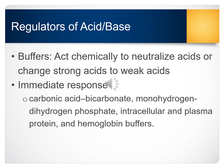The buffer is the fastest acting system and the primary regulator of acid-base balance. Buffers act chemically to change strong acids to weak acids or to neutralize acids. The buffers in the body include carbonic acid bicarbonate, monohydrogen and dihydrogen phosphate, intracellular and plasma proteins, and hemoglobin buffers.